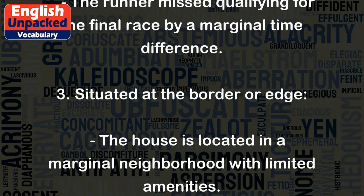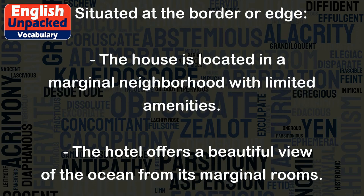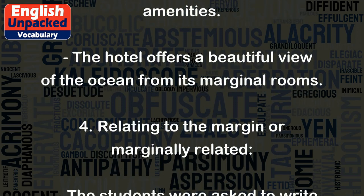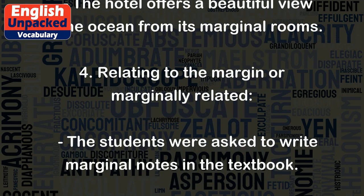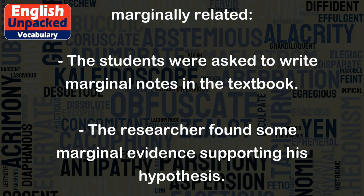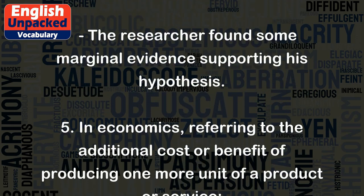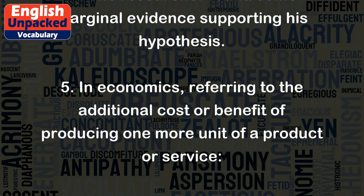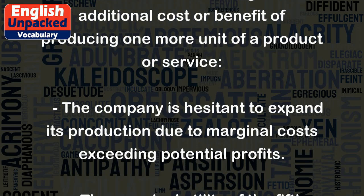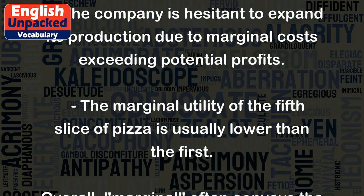3. Situated at the border or edge: The house is located in a marginal neighborhood with limited amenities. The hotel offers a beautiful view of the ocean from its marginal rooms. 4. Relating to the margin or marginally related: The students were asked to write marginal notes in the textbook. The researcher found some marginal evidence supporting his hypothesis. 5. In economics, referring to the additional cost or benefit of producing one more unit of a product or service: The company is hesitant to expand its production due to marginal costs exceeding potential profits. The marginal utility of the fifth slice of pizza is usually lower than the first.